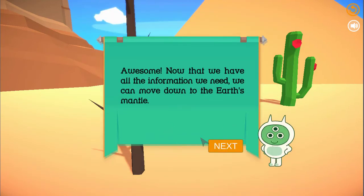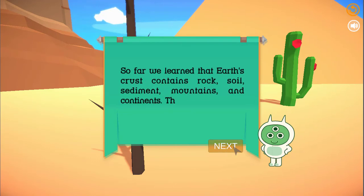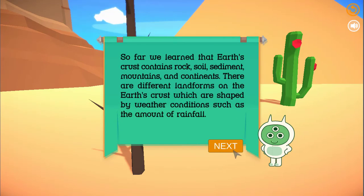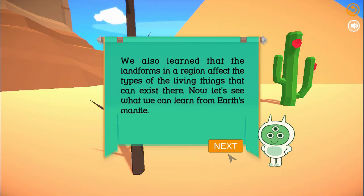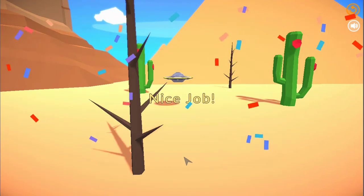Awesome! Now that we have all the information we need, we can move down to the Earth's mantle. So far we learned that Earth's crust contains rock, soil, sediment, mountains, and continent. We also learned that the landforms in a region affect the types of the living things that can exist there. Now let's see what we can learn from Earth's mantle.